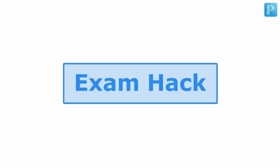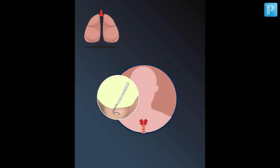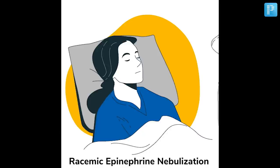The exam hack: post total thyroidectomy or post parathyroid surgery, stridor occurring in a patient indicates development of a tension hematoma at the surgical site compressing on the airways — a definite medical emergency. If the question mentions laryngotracheobronchitis, management is racemic epinephrine nebulisation.